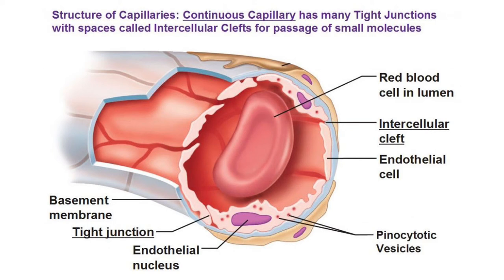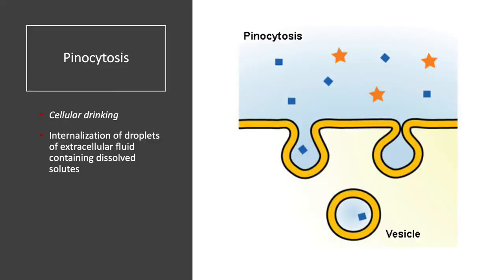Continuous capillaries are the most common but the least permeable. They have intercellular clefts — gaps between endothelial cells — allowing movement by diffusion or bulk flow. Materials can also move through the cells via membrane transport, such as pinocytosis. Pinocytosis, meaning 'cellular drinking,' is a specific type of endocytosis where we internalize droplets of extracellular fluid by invaginating the membrane to form a vesicle.